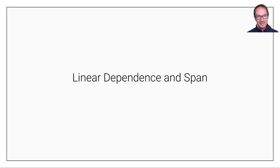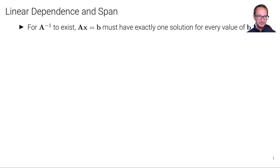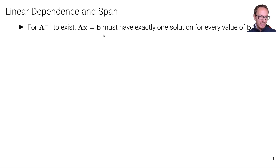Let us now analyze the solution space of a linear system by looking at the linear dependencies and the span of the column space of a matrix. For the inverse matrix to exist, the linear system Ax equals b must have exactly one solution for every value of b. Otherwise, if we multiply A to the power of minus one with b, we would not have a unique result x.